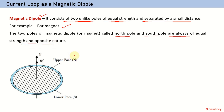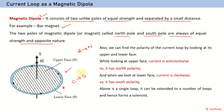Now let us consider a circular loop. Looking at its upper side, the current is in the anti-clockwise direction, and anti-clockwise direction means north pole. From the lower side, the same current will appear as moving in clockwise direction, so this side will appear as south pole. In this way we can find the polarity of the current loop by looking at its upper and lower faces.